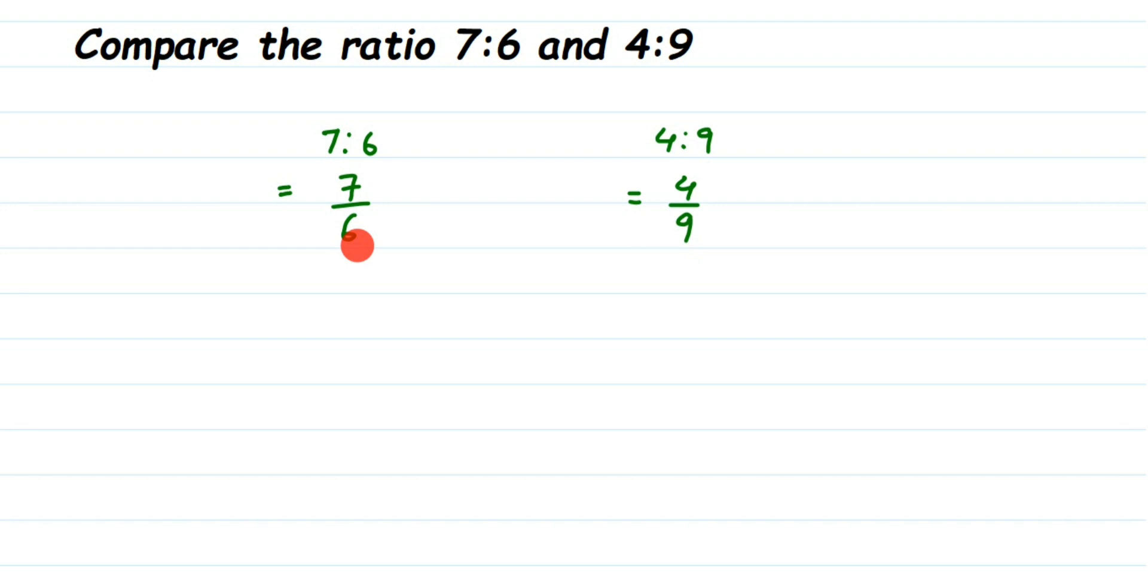But here I'm going to show you the easiest way, that is called cross multiplication. Where we have 7 by 6 and 4 by 9, I'm going to cross multiply these numbers. So I'm going to multiply 9 with 7. So 9 times 7, or 7 times 9, is 63.